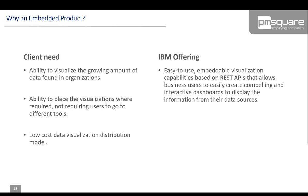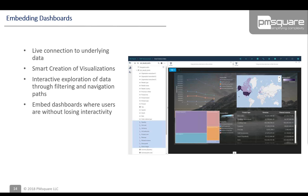You get a live connection to underlying data and smart creation of visualizations. If you've used Cognos dashboarding, this makes sense: you have a field from your data, you drag it onto the canvas, and the tool applies intelligence to create a visual for you based on the type of data. For example, if you drag on a classification like 'department' it might start with a list of departments, whereas if you drag a number on it would summarize that number — and if you drag both on together it would summarize that number by department.